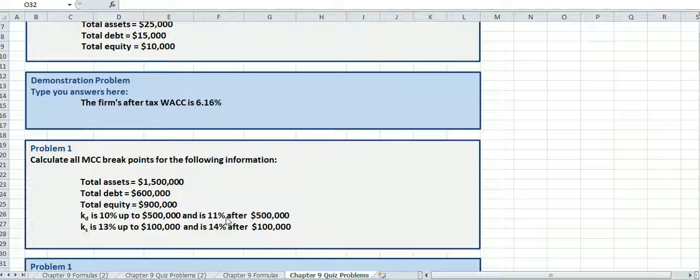We are looking at problem one on your chapter 9 quiz right here, where we're calculating all the marginal cost of capital breakpoints with the following information. So we have total assets, total debt,